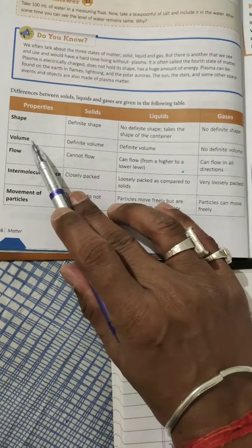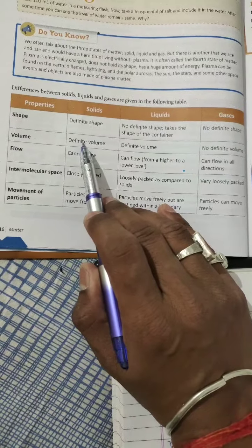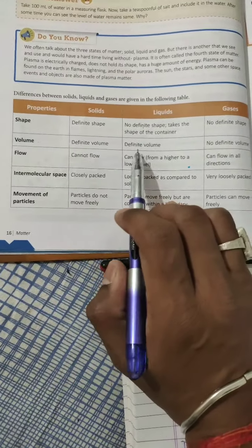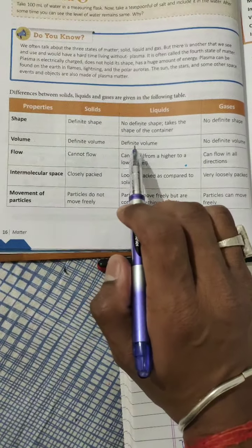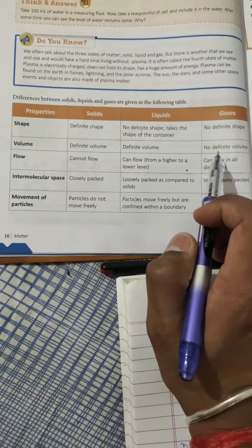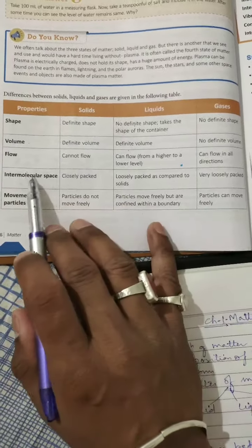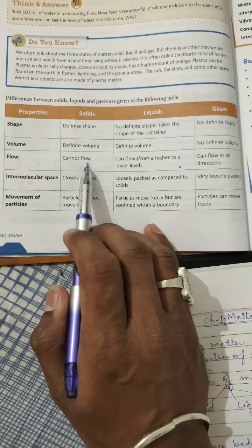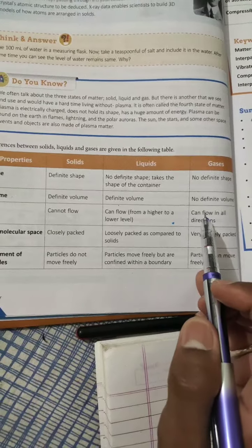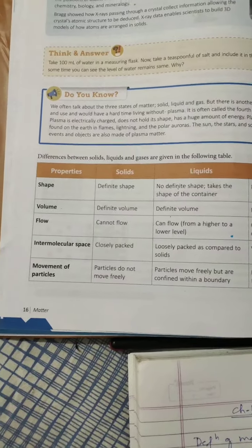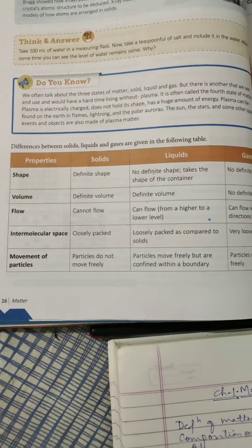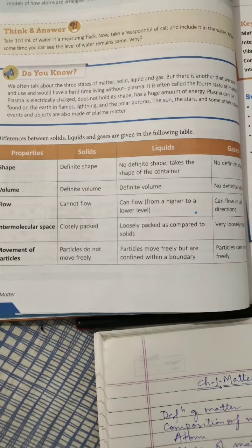According to volume: solids are having definite volume, liquids are also having definite volume, gases are not having definite volume. According to flow: solid cannot flow, liquid can flow from higher level to lower level, and gases can flow in all directions. These all properties we have studied in the first video.